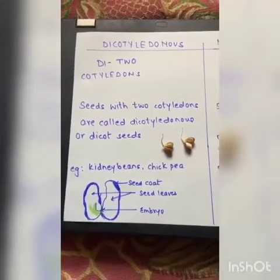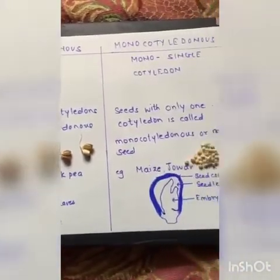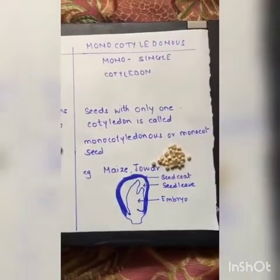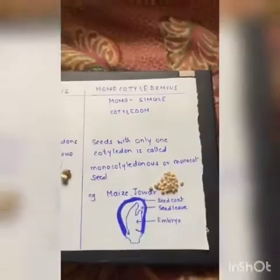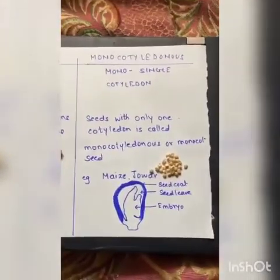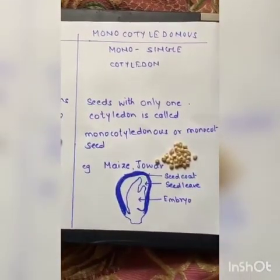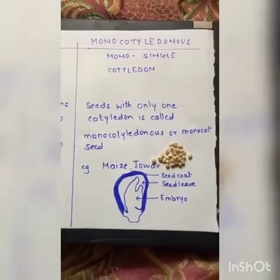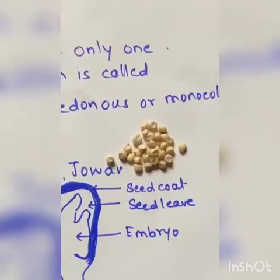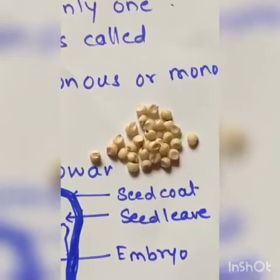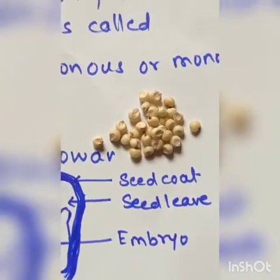Now we will study monocotyledons. Mono means single, so seeds with only one cotyledon are called monocotyledons or monocot seeds. Examples are maize and jowar. Here I have shown you the example of jowar seeds which have only a single cotyledon.